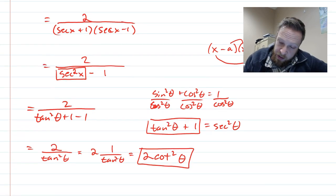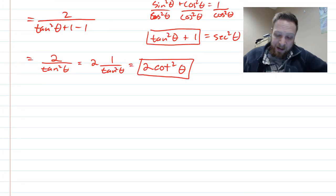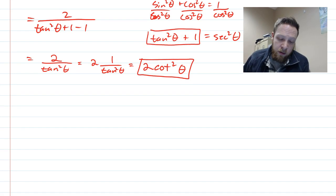And so our goal here is to get it as simple as possible, get rid of fractions if we could rewrite it in terms of cotangent or secant or cosecant. And that's as simple as we can get.